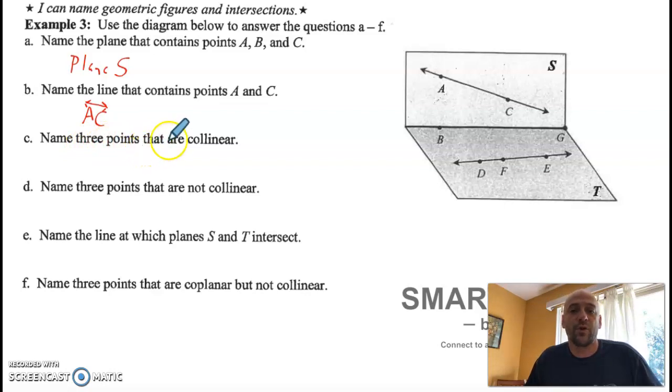Name three points that are collinear, on the same line. So three points on the same line. I'm looking down here at D, F, and E. The order that you name them does not matter. Just list them. D, F, and E. Those three points that are on the same line, so they're collinear.